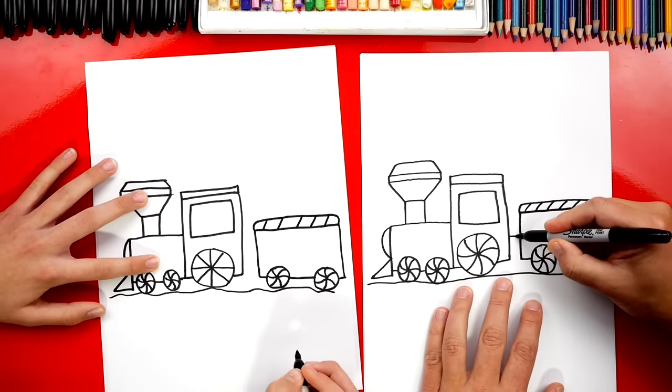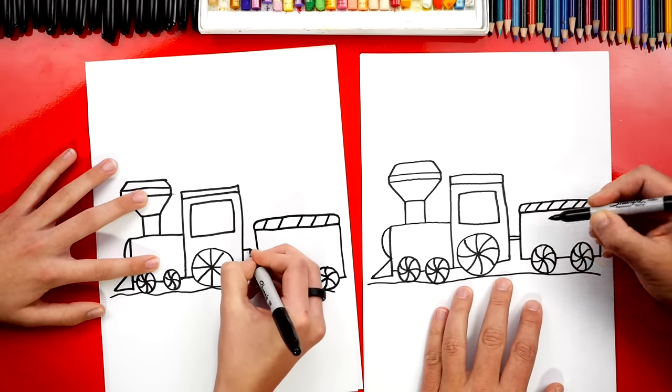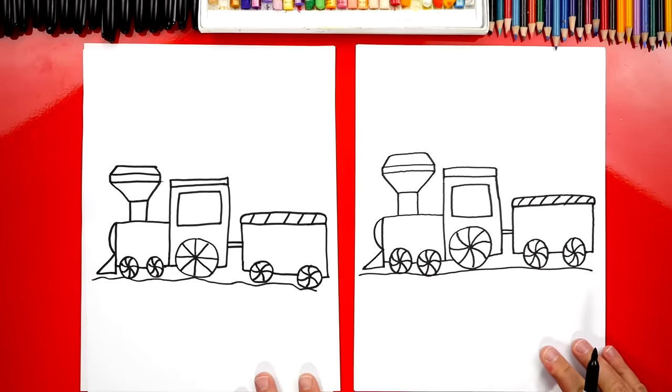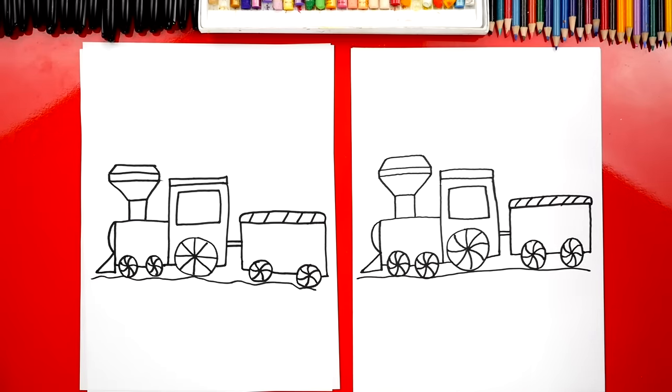All right, let's connect the car to the engine. We'll draw two lines that connect it. All right Jack, we did it. We finished drawing our Christmas train, except we still need to do one more thing. What is it? Color it. Yeah, we need to color our trains. They're going to look so much better colored in and we're also going to add a few extra details. You ready to fast forward? Yes.